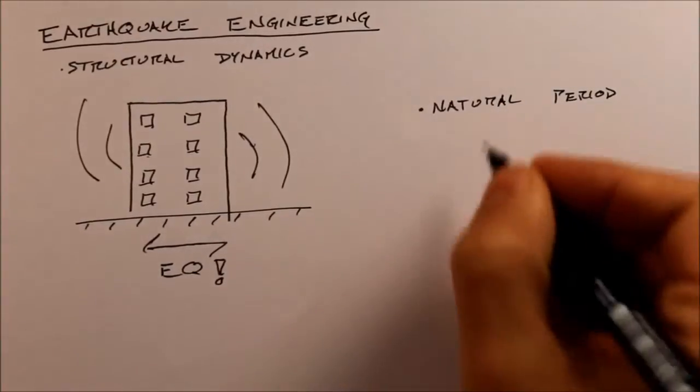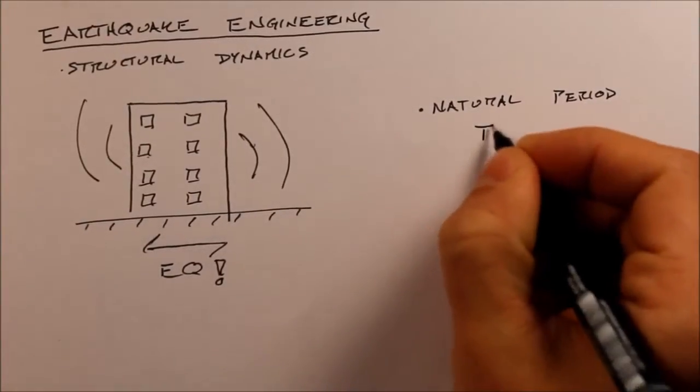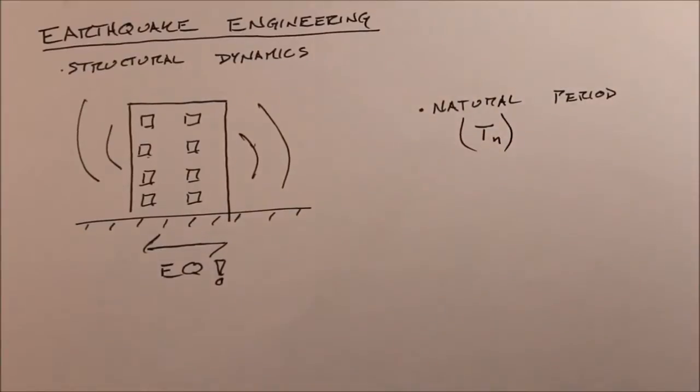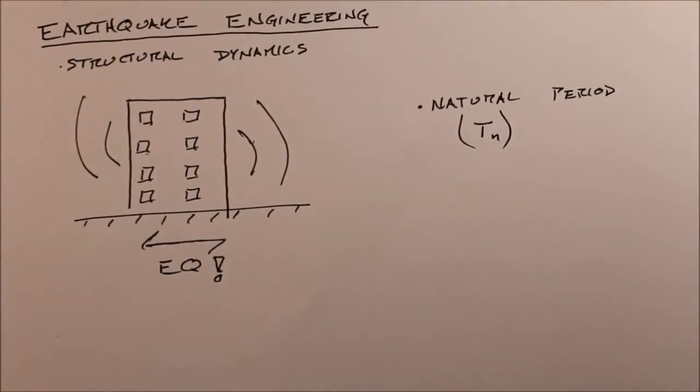And it's noted with the symbol TN. So natural period, well let's find out what is a period. So a period of vibration, let's start with an example.